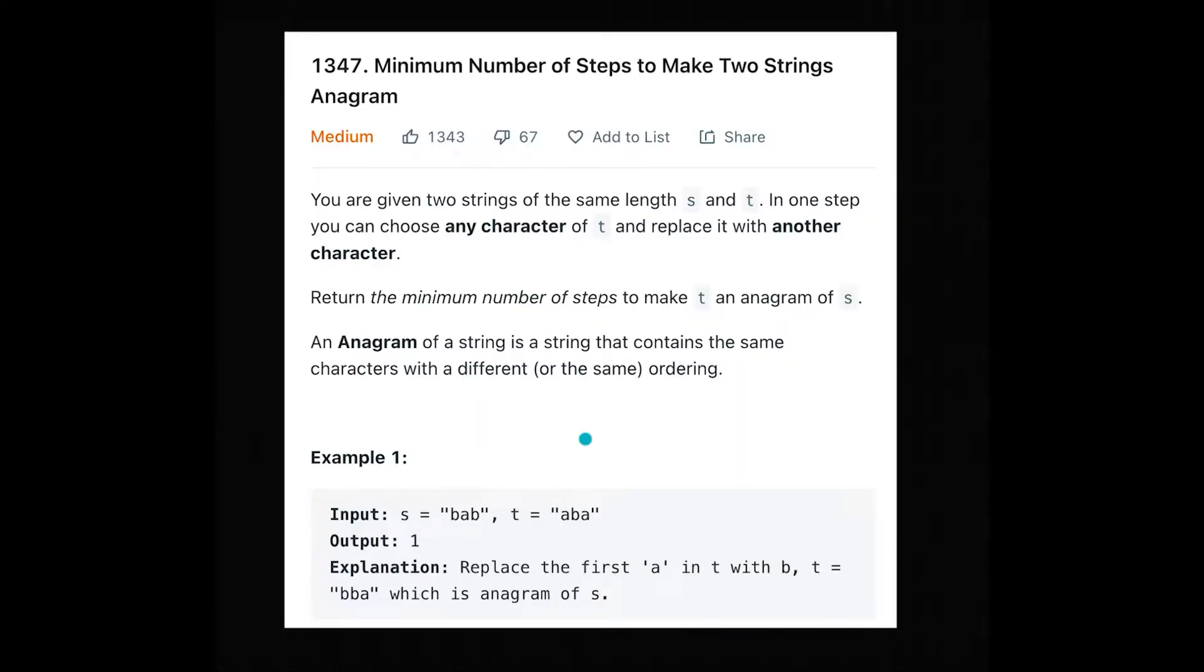Hi everyone, today we are going to solve the LeetCode question Minimum Number of Steps to Make Two Strings Anagram. You are given two strings of the same length s and t. In one step you can choose any character of t and replace it with another character.